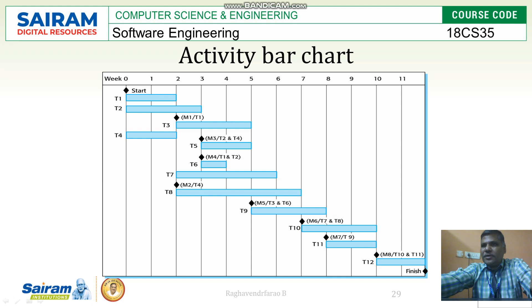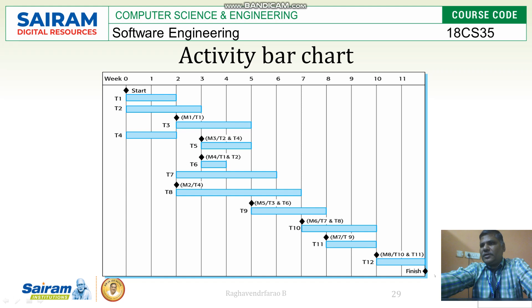After completion of T7 and T8, T10 is going to start. T11 starts after T9 completes — T9 completes in the eighth week, so at the end of that week T11 is going to start. T12 is going to start by the 10th week because T10 and T11 should both complete. Those things will be completed by the 10th week and finally that particular task will be finished. These things are the deliverables and milestones that are going to be met.